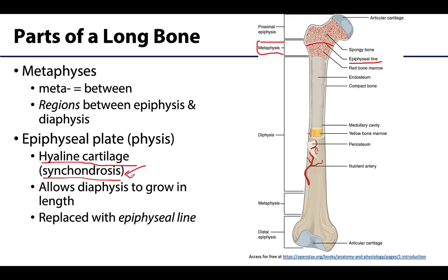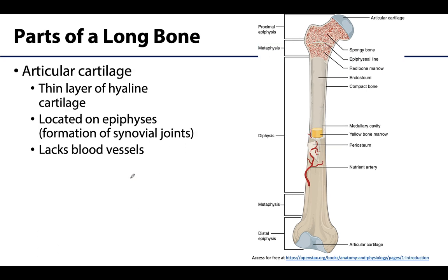On the ends of the epiphyses you will have a thin layer of hyaline cartilage. I'm going to outline where this is located on the femur here. This thin layer of hyaline cartilage is called articular cartilage, and articular cartilage is extremely important in synovial joints — it is an added layer of shock absorption. But this cartilage is not what is actually connecting or joining the separate bones; it's just a component of the synovial joint.